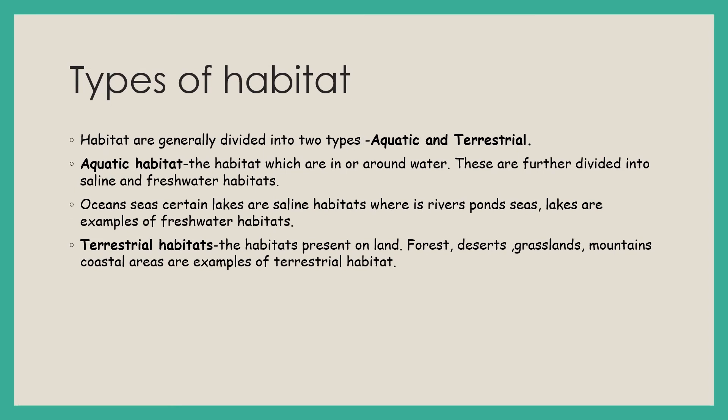Coming back to habitat: the habitat is the place where an organism lives, and the components that make up the habitat are the biotic and abiotic components. The habitat is basically divided into two types — aquatic and terrestrial. Aquatic habitat refers to habitats in or around water. The word 'aqua' refers to water. Aquatic habitat is again divided into saline and freshwater habitat.